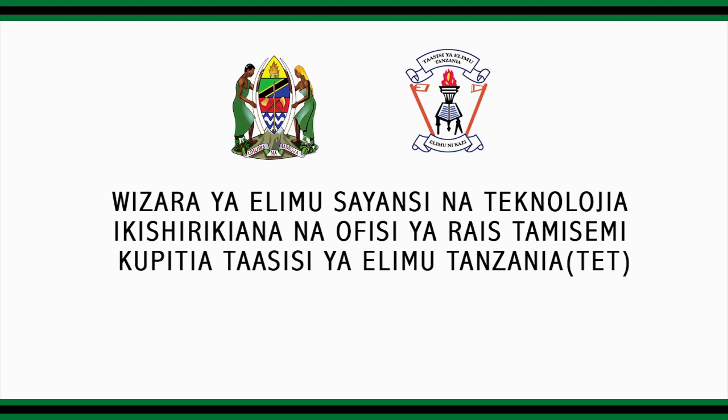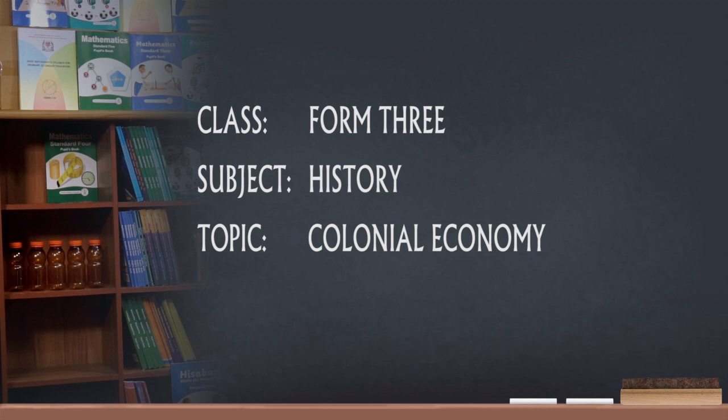Number 5: Colonial economy was also characterized by the dominance of Europeans. They established their trading companies, which were mere branches of imperialist powers. These trading companies could open and shut any given market since they monopolized all trading activities. The most notable companies include the Imperial British East African Company, German East African Company, and International Association, among others.